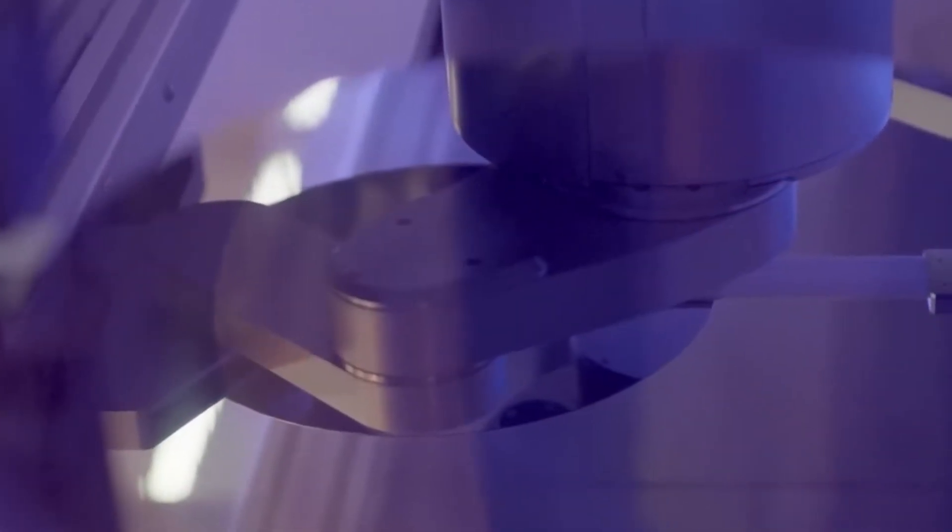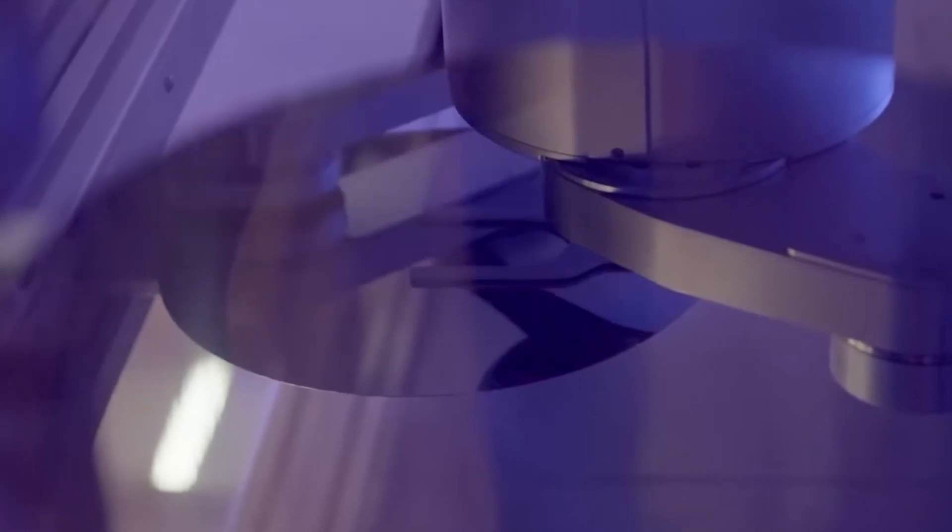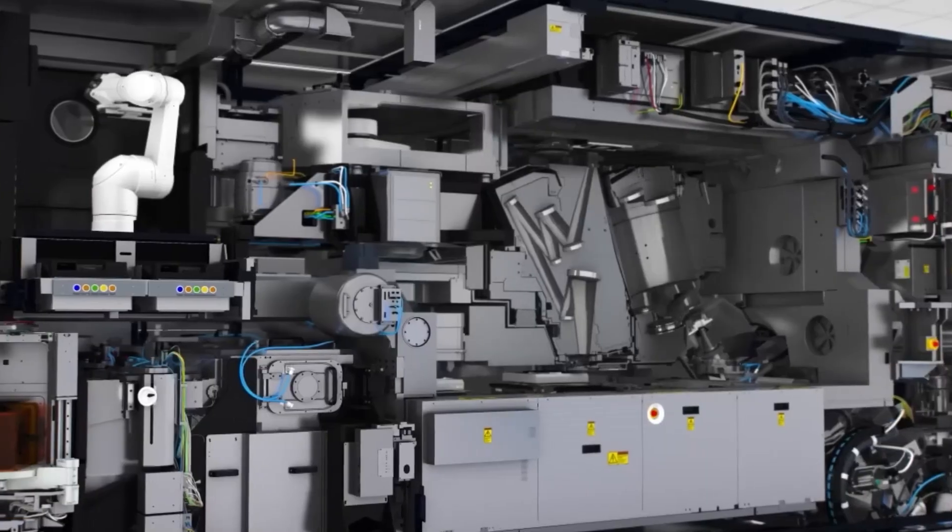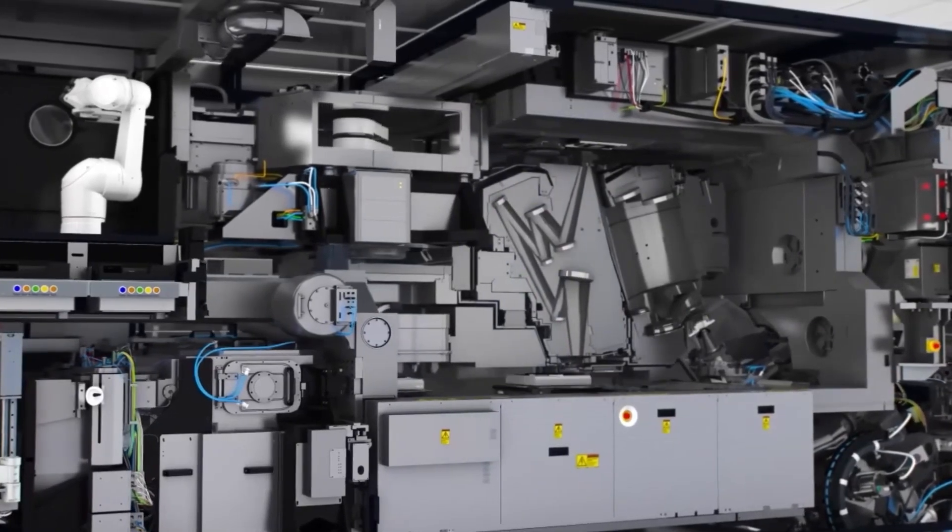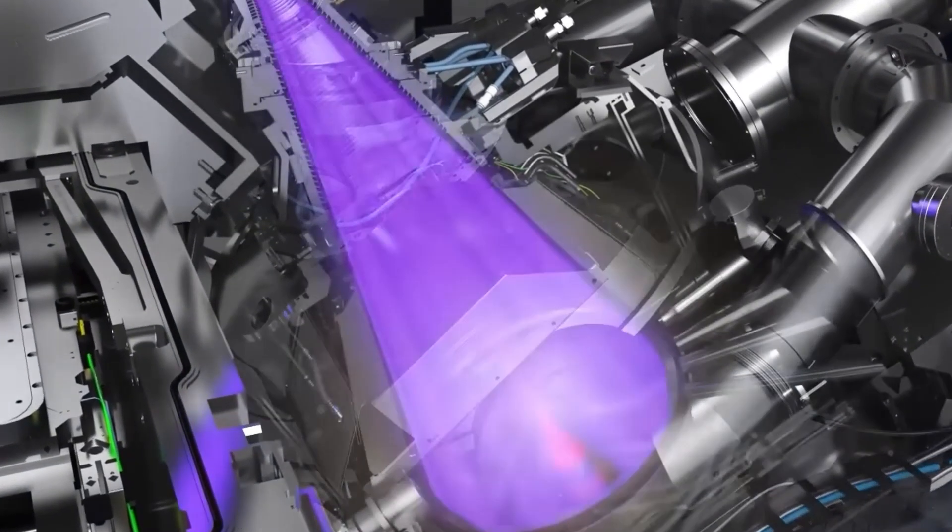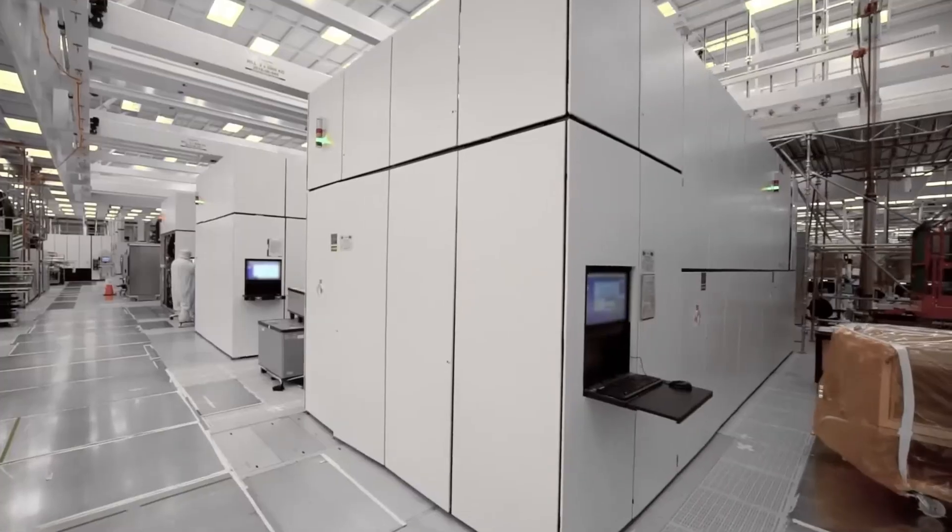The process begins with wafers, flawlessly smooth disks of silicon. These are fed into the EUV lithography machines, where beams of ultraviolet light are used to project NVIDIA's complex chip blueprints onto the silicon surface. But there's a twist. This isn't just shining a light and hoping for the best. The wavelength of the light, measured at just 13.5 nanometers, is so small it's absorbed by most materials, making precision mirrors and lenses indispensable.